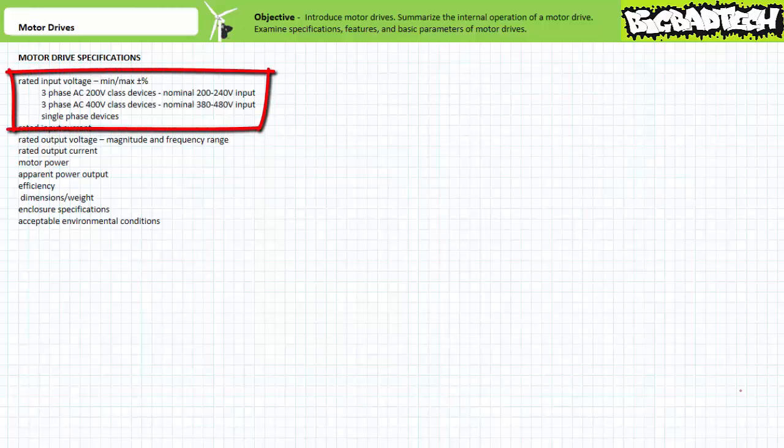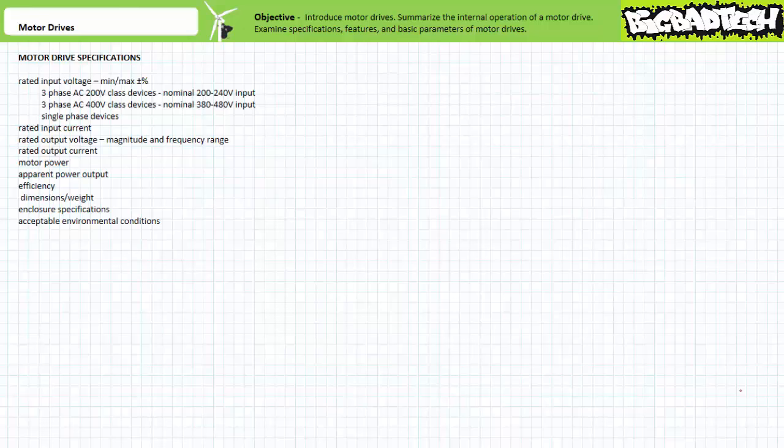Most motor drive manufacturers divide their offerings into three general product classes: three-phase 200-volt class devices including three-phase AC distribution systems with nominal 200 to 240 volt values; three-phase 400-volt class devices including three-phase AC distribution systems with nominal 380 to 480 volt values; and single-phase devices. These are arbitrary distinctions — certain manufacturers may divide into more or fewer classes and offer motor drives operating at higher voltages. There also exist motor drives that make use of single-phase AC input.